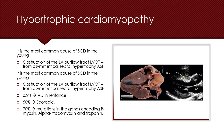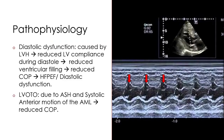From a pathophysiological perspective, hypertrophic cardiomyopathy is characterized by diastolic dysfunction and left ventricular outflow tract obstruction. Diastolic dysfunction is basically due to reduced ventricular compliance as a result of left ventricular hypertrophy and subsequent impaired left ventricular filling.